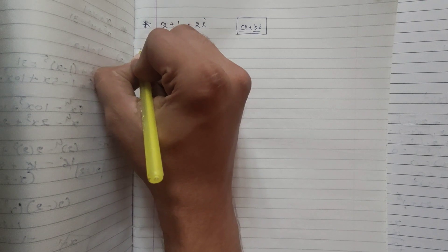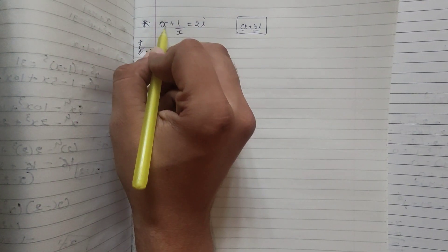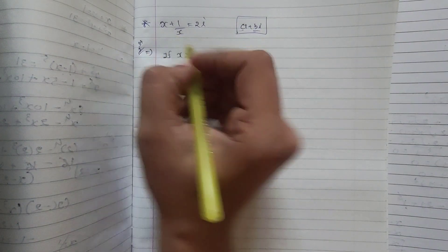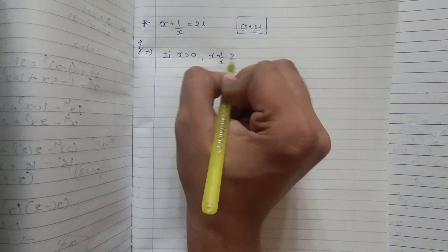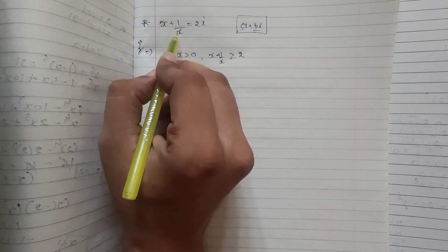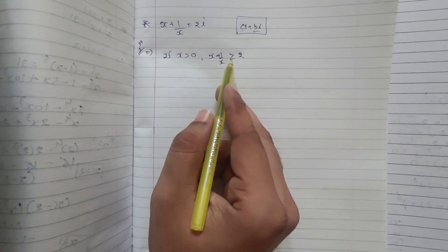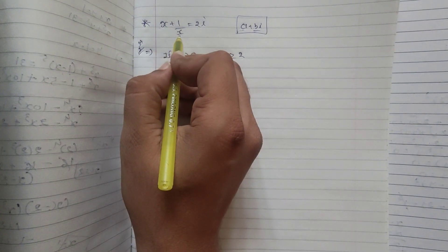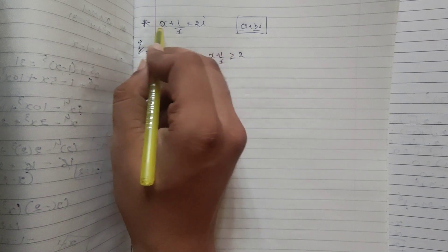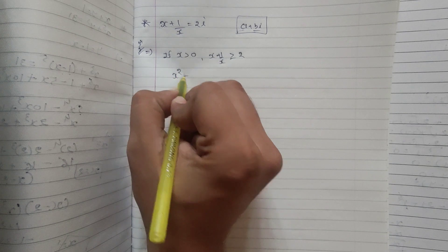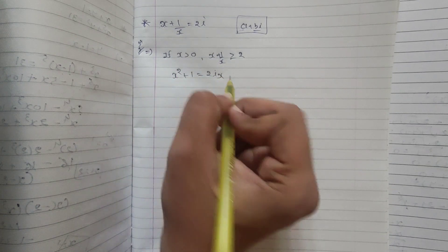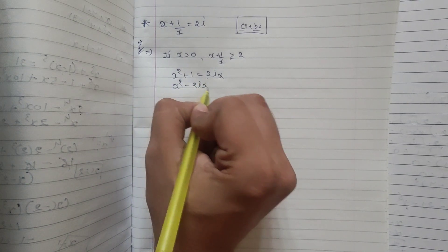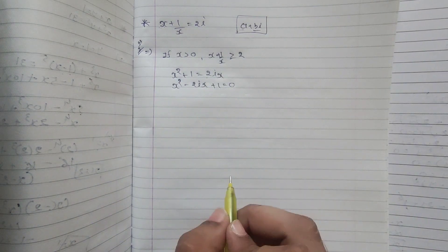For the first method, suppose x is greater than 0. That means the value of x plus 1 by x will be greater than or equal to 2, because if you put x equal to 1, you get 1 plus 1 by 1 which equals 2. This is just a condition. Now, x plus 1 by x equals 2i. If I multiply both sides by x, it becomes x squared plus 1 equals 2ix. Bringing 2ix to the left hand side: x squared minus 2ix plus 1 equals 0.